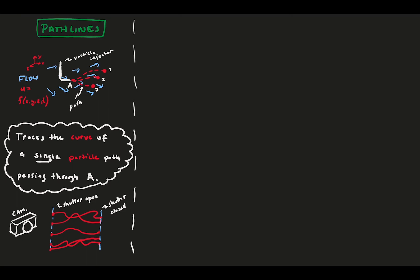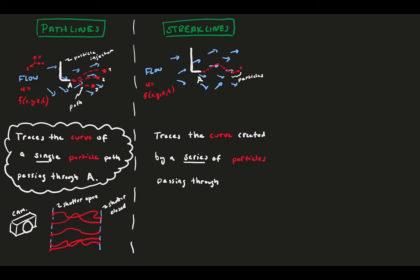Next, we have the streaklines. Say we have the same flow from before that is three-dimensional and unsteady. And we stick a particle injector into this flow. But this time, instead of injecting one particle and watching that particle's path, we rapidly inject a series of particles. After a while, the series of particles appear to make up a curve in the flow. At any given instant, this curve that connects the series of particles is called a streakline. Officially, the streakline is defined as the line created by a continuous series of particles that pass through point A at some time.